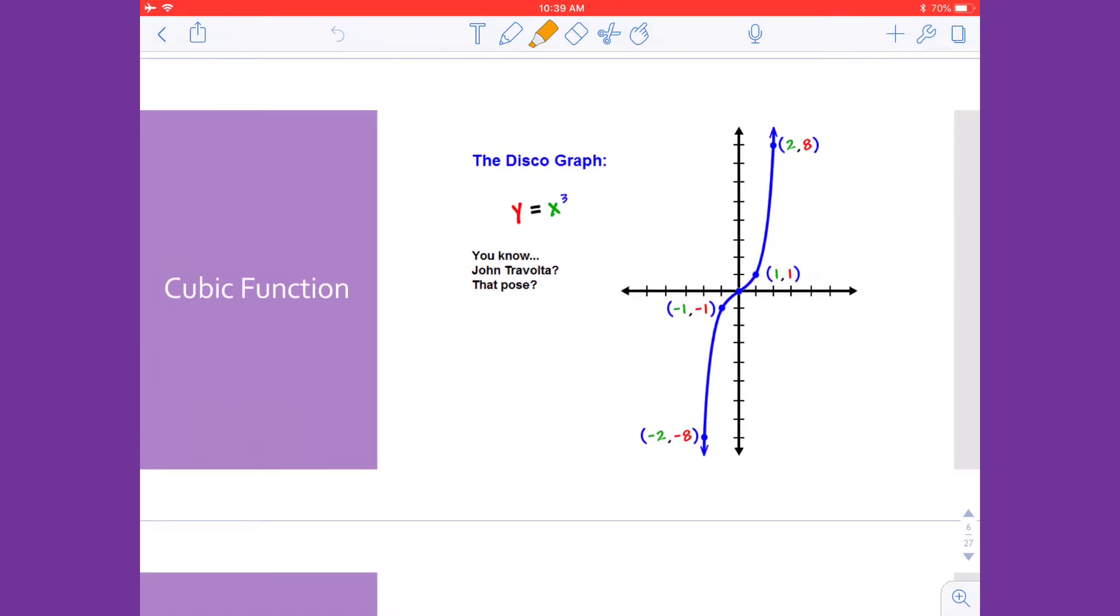The cubic function, you can see that this has a cool little shape. I like to call it the disco graph. If any of you have seen Saturday Night Fever with John Travolta, it reminds me of that pose. The right hand is going up, the left hand is going down. It too passes through the origin and its equation is y equals x cubed.